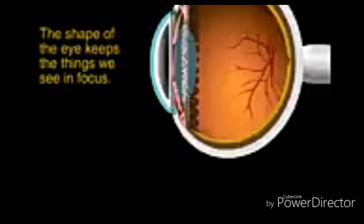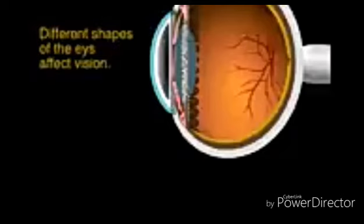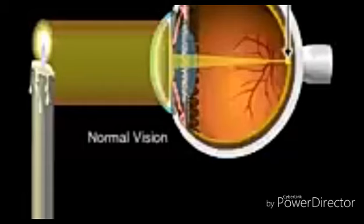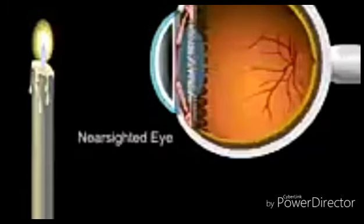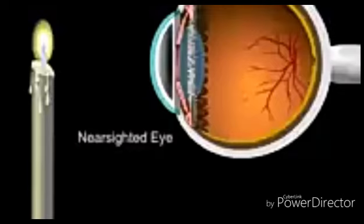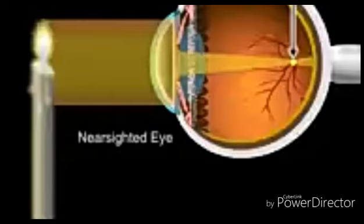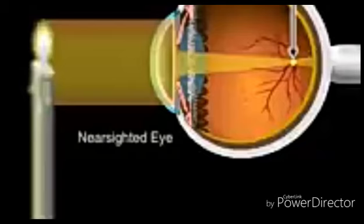Now let's consider two common conditions that cause blurry vision. The eye's shape is important for keeping things in focus. With normal vision, light focuses precisely on the retina at a location called the focal point. But if the eye is longer than normal, the more distance there is between the lens and retina. The cornea and lens still bend light the same way, meaning the focal point will be somewhere in front of the retina rather than on it. This makes it difficult to see things that are far away. A person with a long eye is said to be nearsighted.